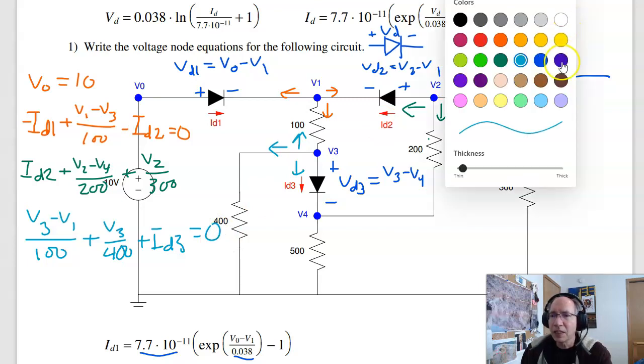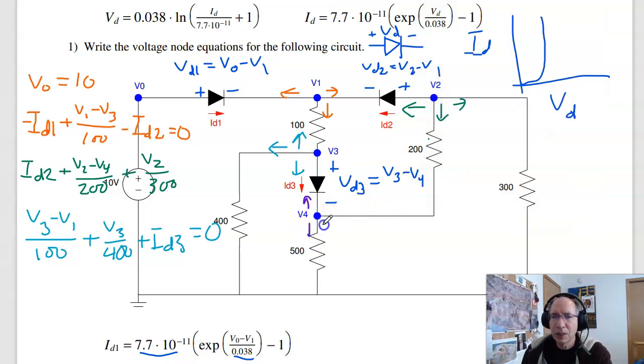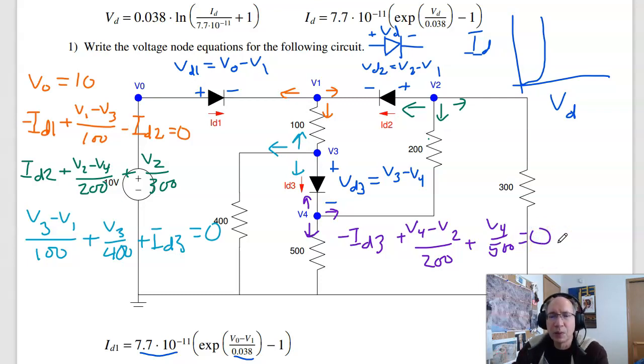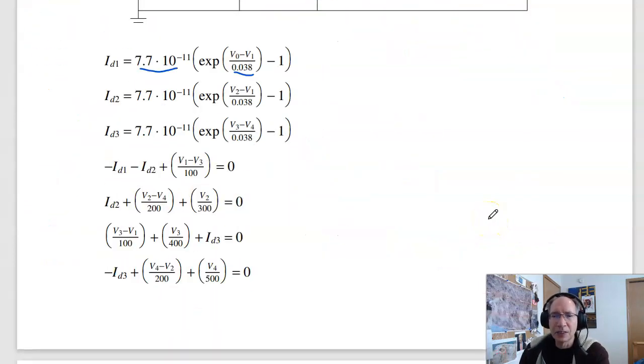And the last equation. Current up, current down, current right equals 0. At node 4, that's minus ID3, that's the current up, plus V4 minus V2 over 200, plus V4 over 500 equals 0. So there I've got seven equations, or four equations, four unknowns, plus the currents. And those simplify to this.